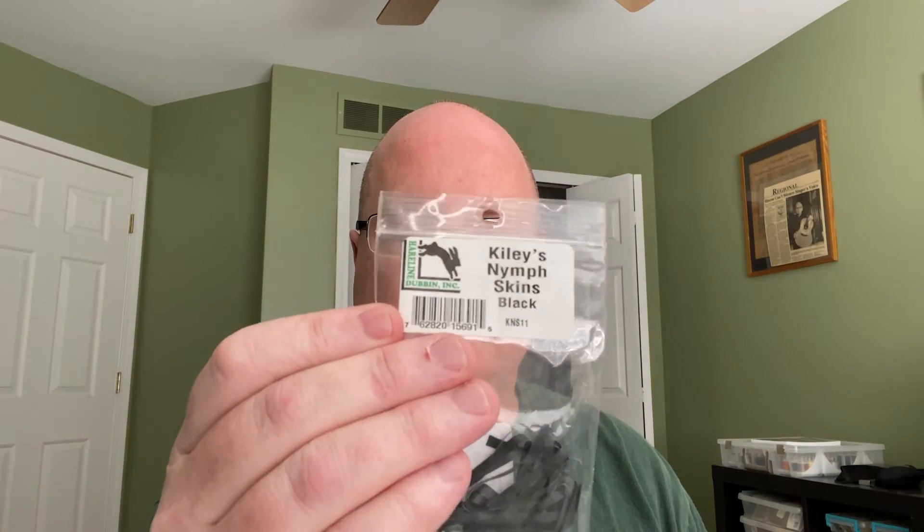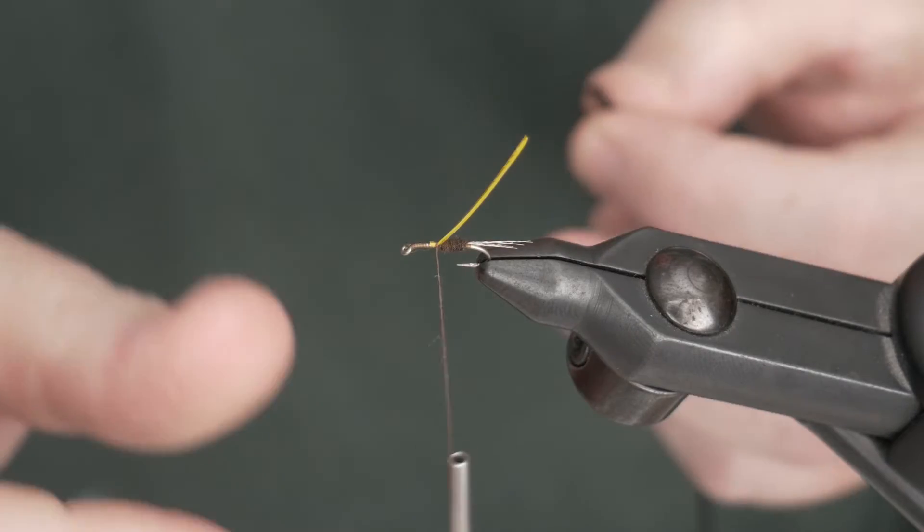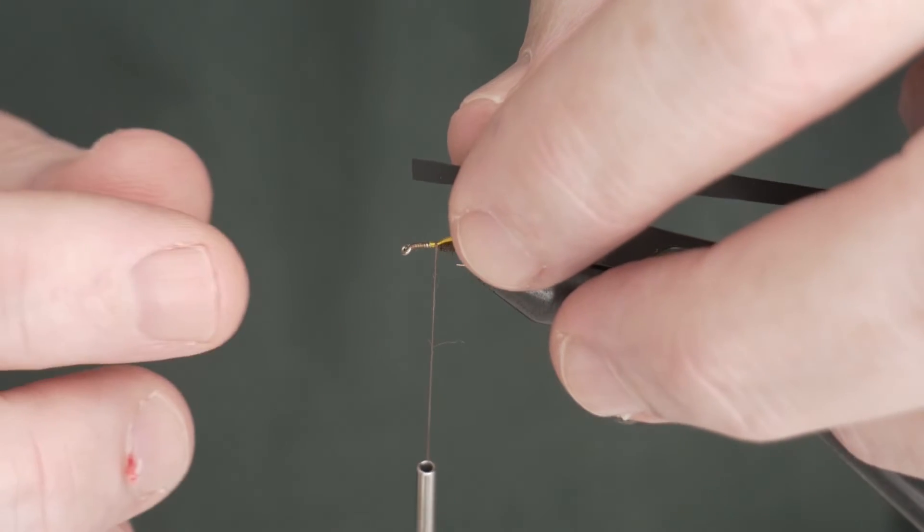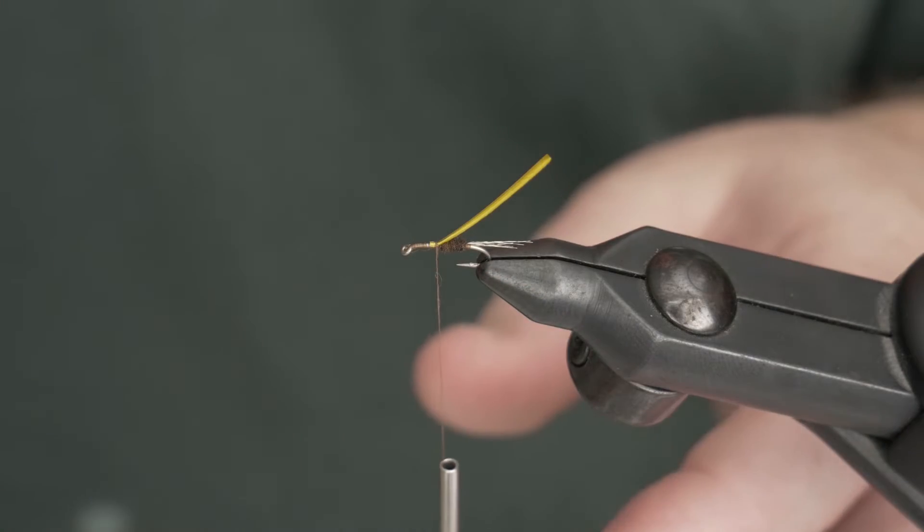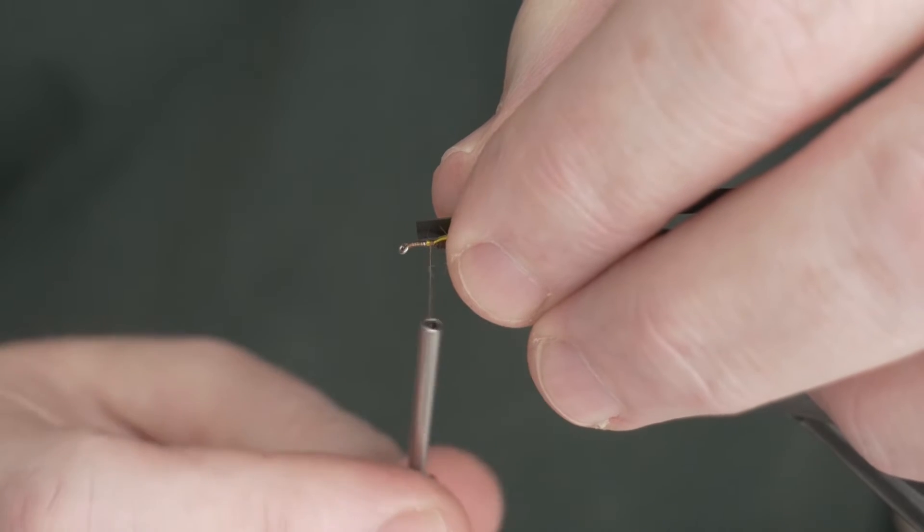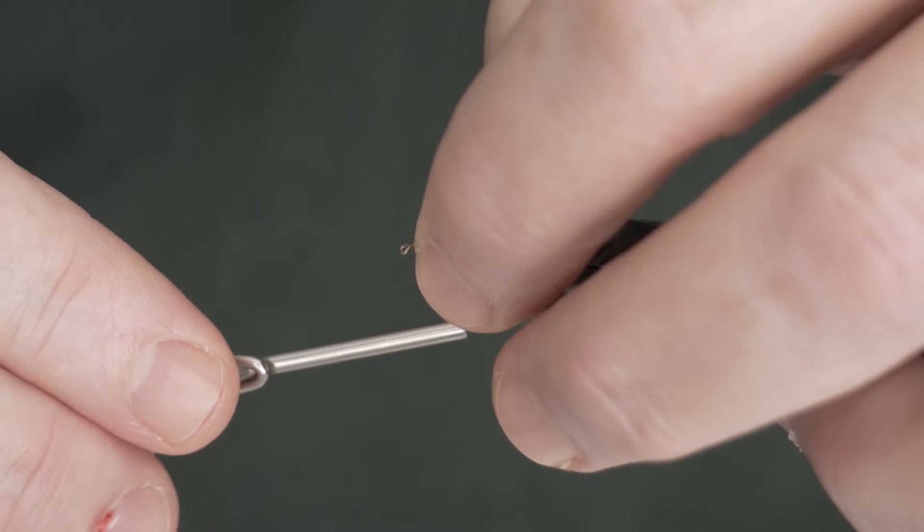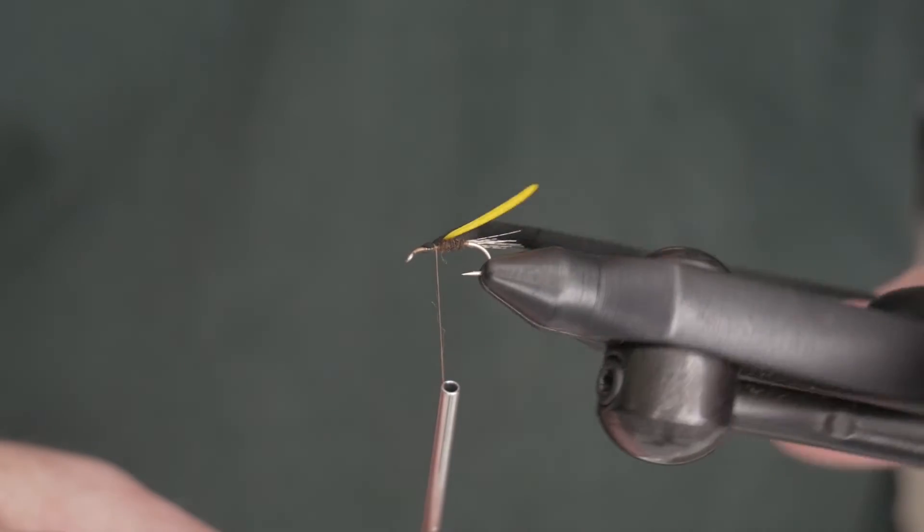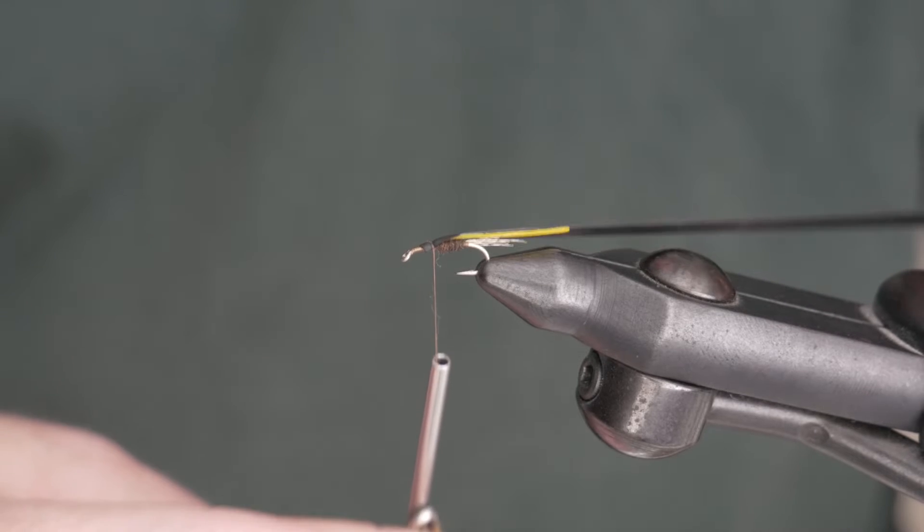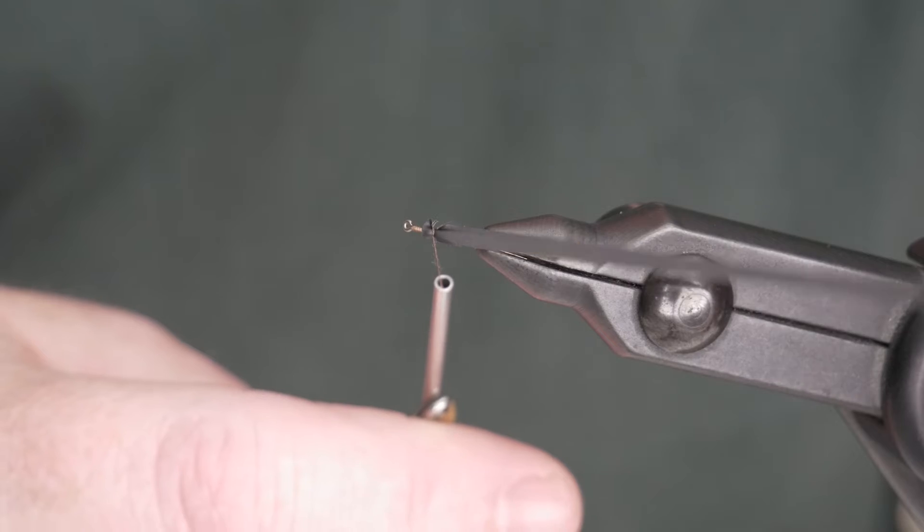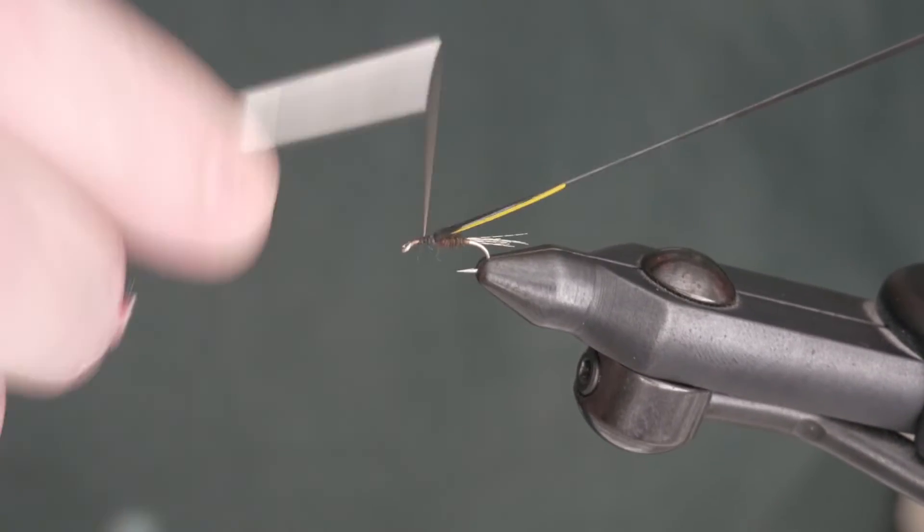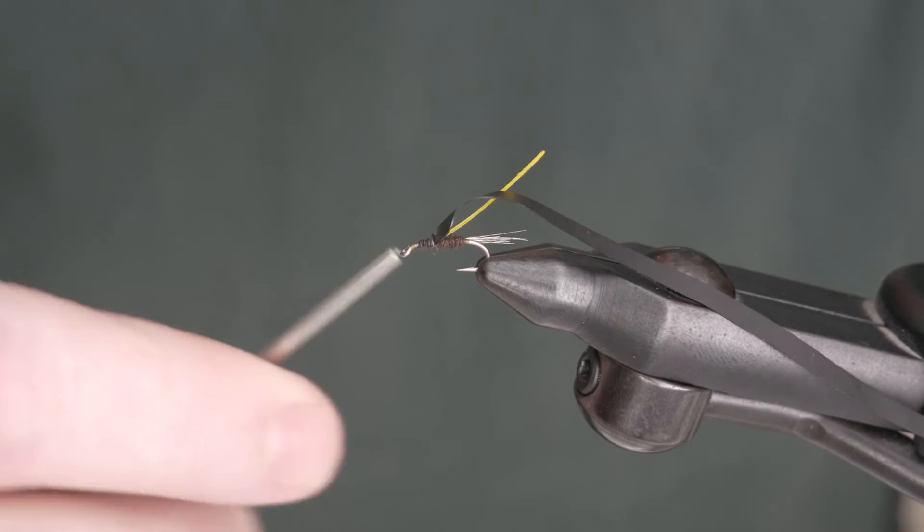Once we have the biot tied in, we're going to use some nymph skin for the wing case. This is kind of a rubbery material. I find it difficult to deal with. I can never seem to get it tied in where I want to. If you have a better way to tie it in than I'm doing it, please comment below. I always try to put this on my side of the hook and then throw a loose wrap on it and gently pull it in and check it. Make sure that you're on top of the hook, as you can see here, and you want to get it pretty much in the middle of where your goose biot is. We want that to split the uprights as we pull our wing case forward.